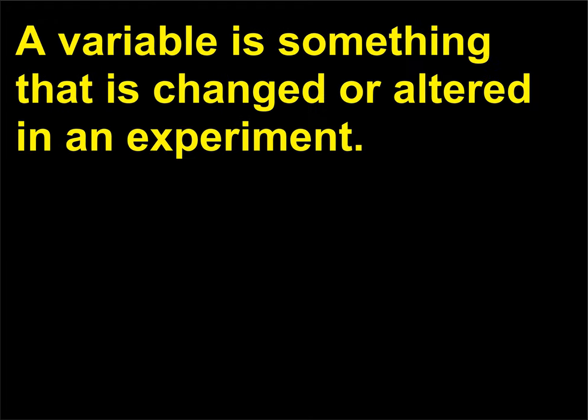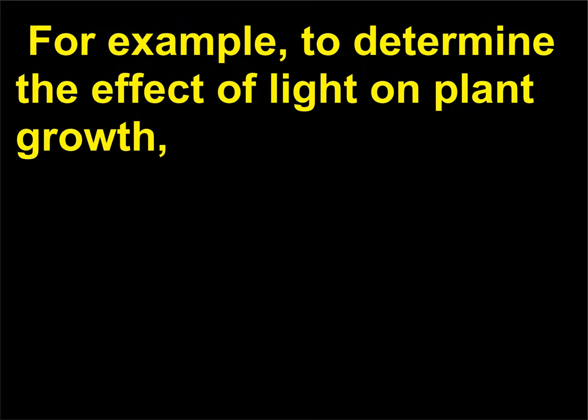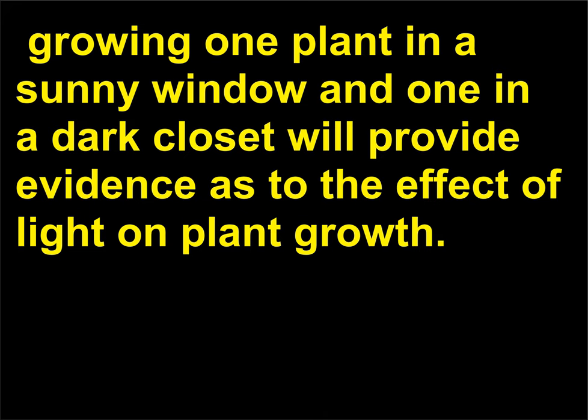What is a variable? A variable is something that is changed or altered in an experiment. For example, to determine the effect of light on plant growth, growing one plant in a sunny window and one in a dark closet will provide evidence as to the effect of light on plant growth.